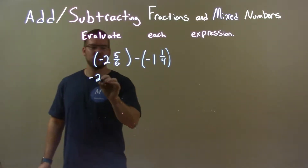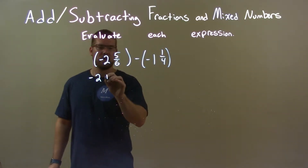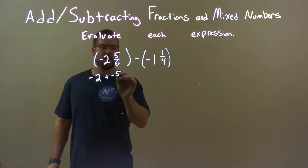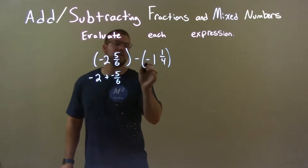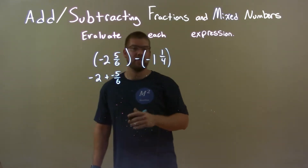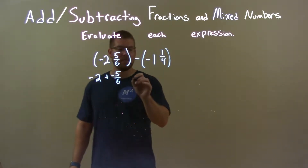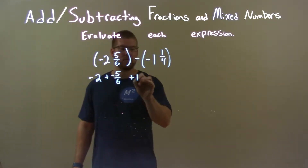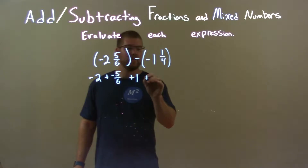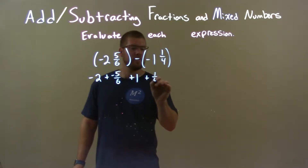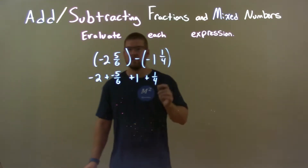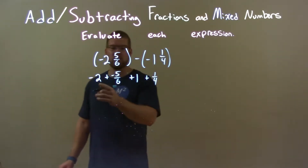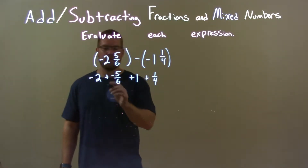So we have negative 2 plus a negative 5/6. And since subtracting a negative is the same thing as adding a positive, we just have plus 1 and then plus 1/4. Now we're going to add our whole numbers and our proper fractions.